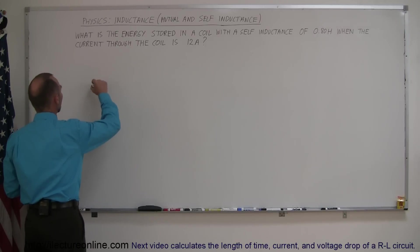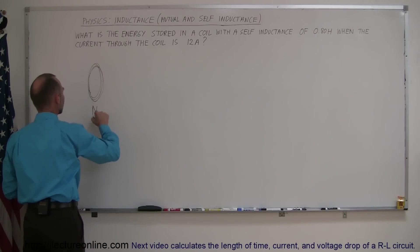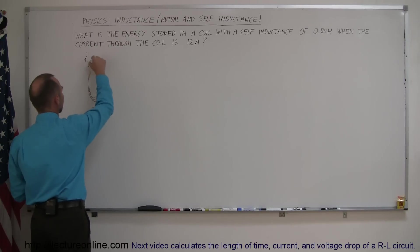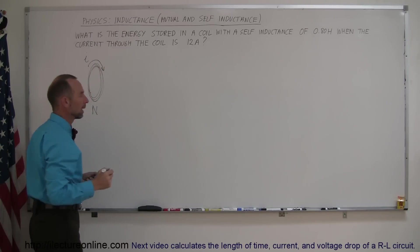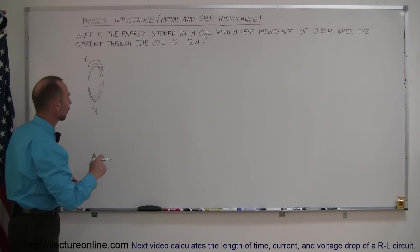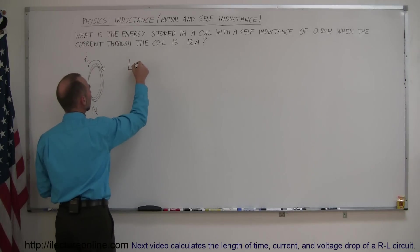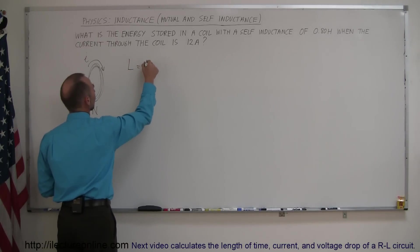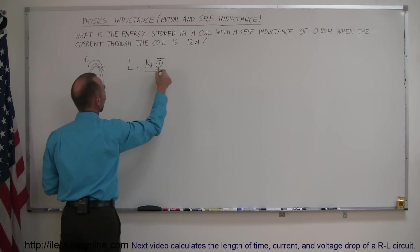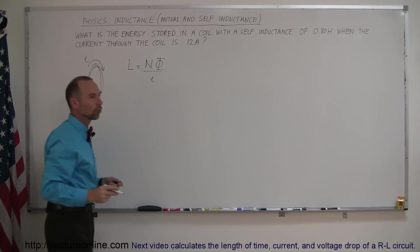If we have a coil that looks like this, with a number of turns — so there are N number of turns — there's a certain cross-sectional area, and at any point in time there's a current I running through the coil. There's a self-inductance related to this coil. We know that the self-inductance L is equal to the number of turns times the flux coming through each turn, divided by the current that runs through the coil.